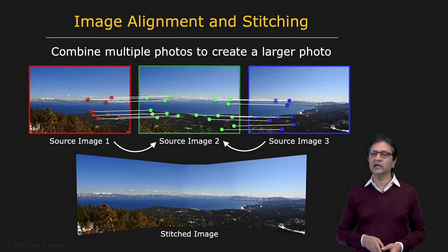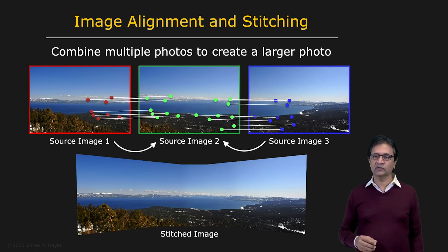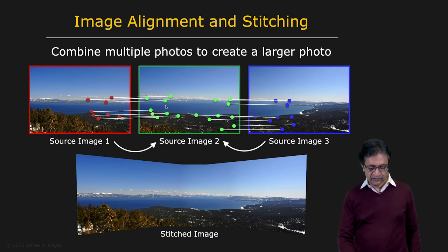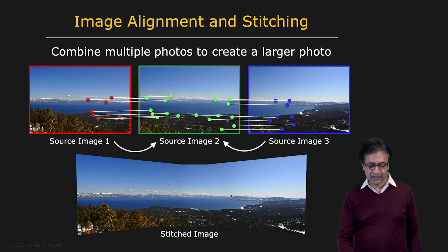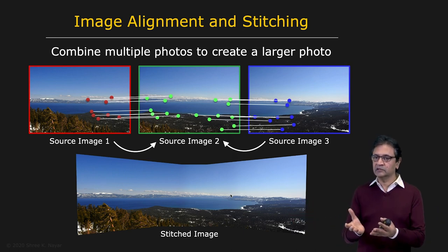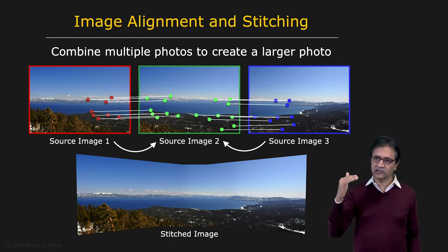Then we look at a couple of popular applications of feature detection. One is the creation of a panorama from a set of images taken from roughly the same viewpoint but by rotating the camera — overlapping images. We apply feature detection to these images, and from three images we are able to create a seamless, wide-angle panorama of the scene. This is an algorithm that sits on most smartphones these days, and we'll see exactly how it works.